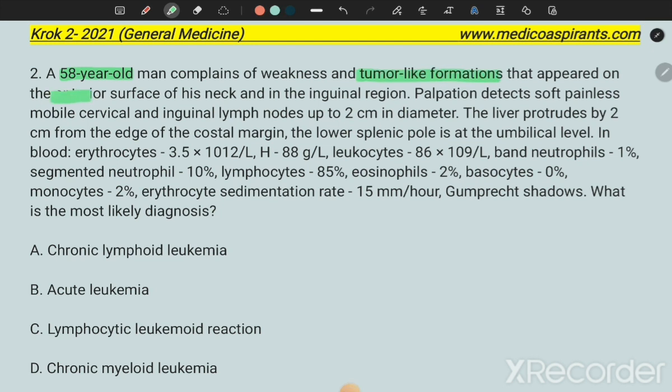A 58-year-old man complains of weakness and tumor-like formations that appear on the anterior surface of his neck and in the inguinal region. On palpation, soft painless mobile cervical and inguinal nodes up to two centimeters in diameter are detected. The liver is enlarged two centimeters from the edge of the costal margin, and the splenic pole is at the umbilical level, also enlarged.